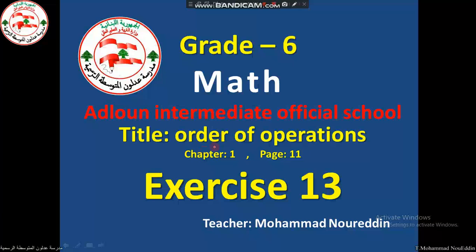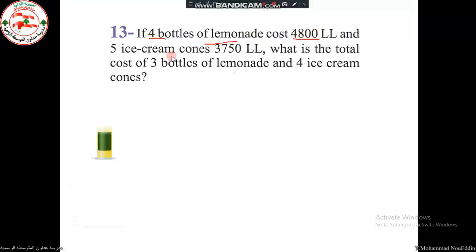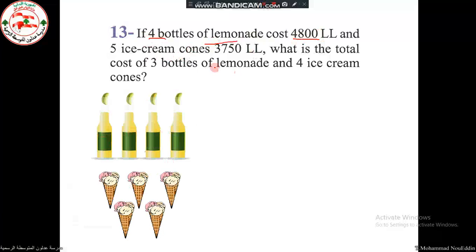Exercise 13. The question is: if four bottles of lemonade cost four thousand eight hundred Lebanese lira, and five ice cream cones cost three thousand seven hundred fifty Lebanese lira, what is the total cost of three bottles of lemonade and four ice cream cones? So here we have one, two, three, four bottles and one, two, three, four, five cones of ice cream.